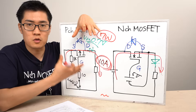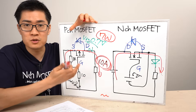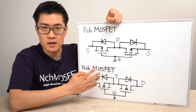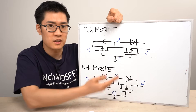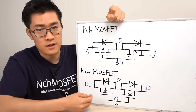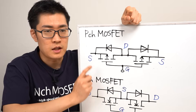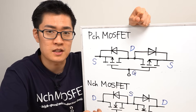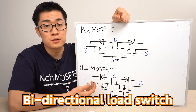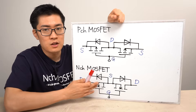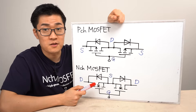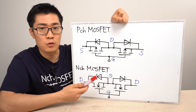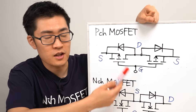When integrating a load switch into compact devices, the heat generated becomes too significant to overlook. To further optimize the circuit and eliminate power loss caused by the diode, a common approach is to connect a MOSFET in reverse orientation. The goal is to ensure that current flows mainly through the MOSFET. By doing this, you can control current flow in both directions while also preventing reverse current, resulting in a load switch with even lower power loss. This type of configuration is known as a bi-directional load switch. The circuit is designed so that the MOSFET's body diode is reverse-connected, meaning that when the MOSFET is turned off, the diode naturally blocks any unwanted current flow.